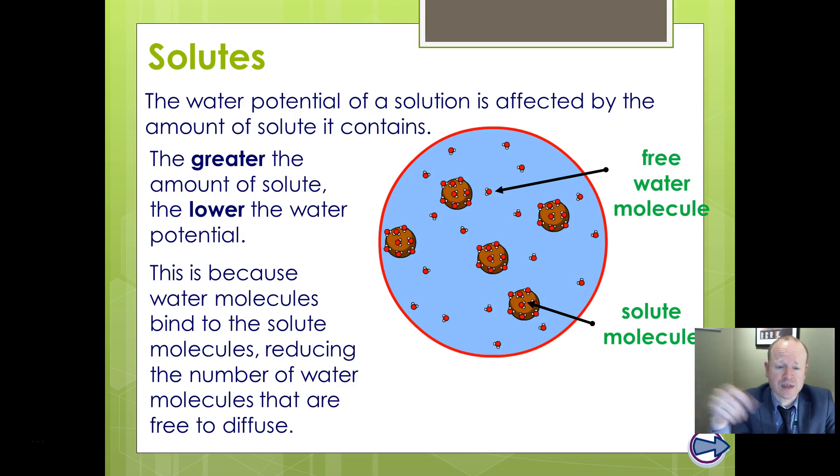And the water molecules get attracted to those because of their charges. The water molecules will tend to bind to them and it means that it's reducing the amount of water that's available to diffuse. So in other words, making more water move towards it because there's less water available for diffusion, and that's maintaining the concentration gradient.